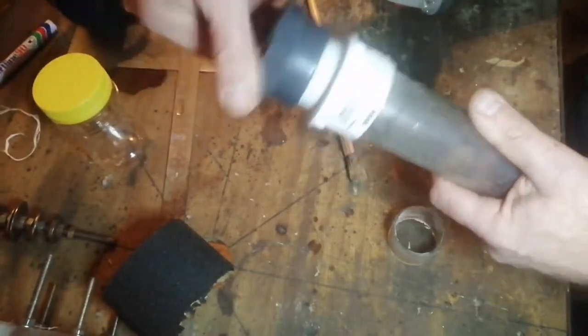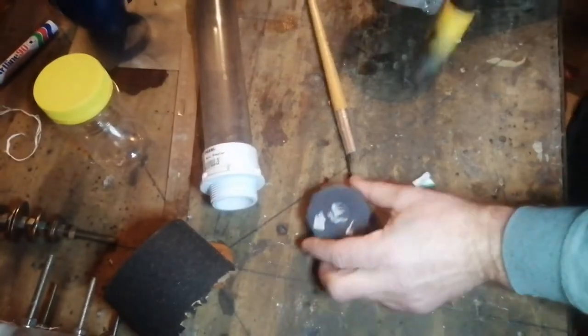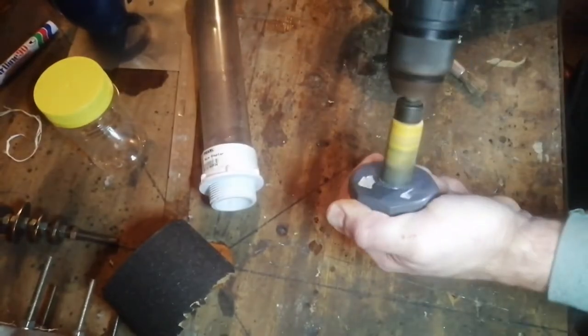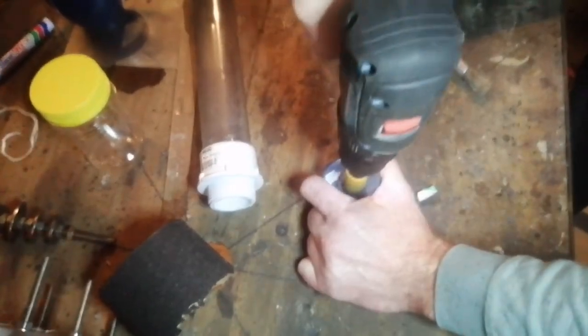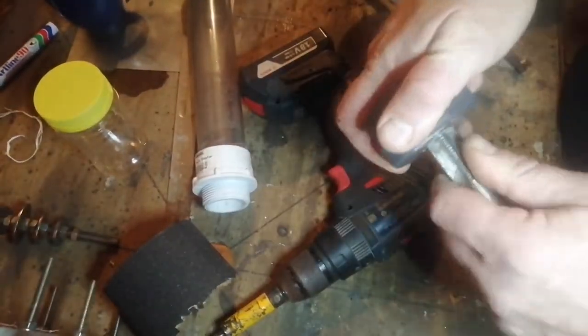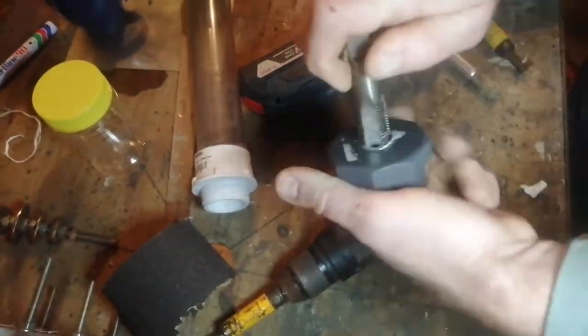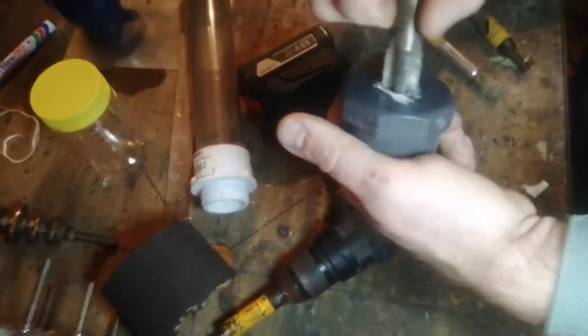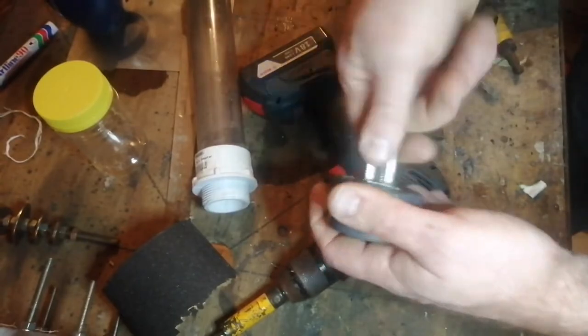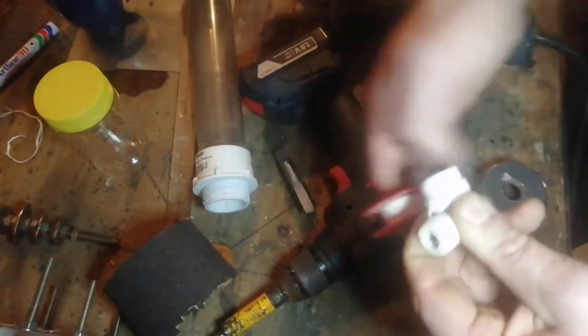Then I glued a 50 millimetre threaded male fitting and an end cap. Then tapped a 19 millimetre thread for an 8 millimetre 90 degree quick fit elbow. These quick fit fittings I got at a water purification shop, or you can get them at a pet shop for fish tanks.